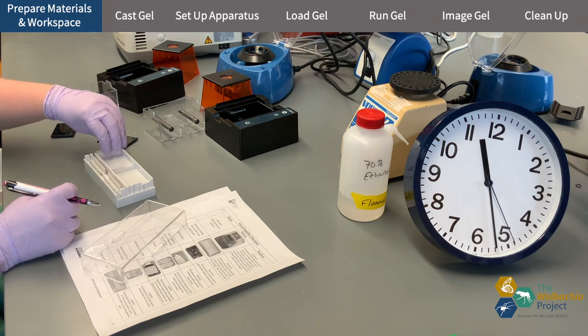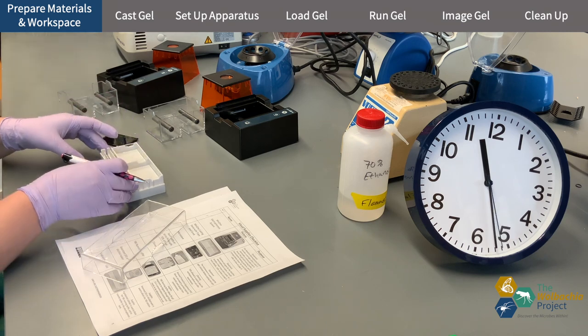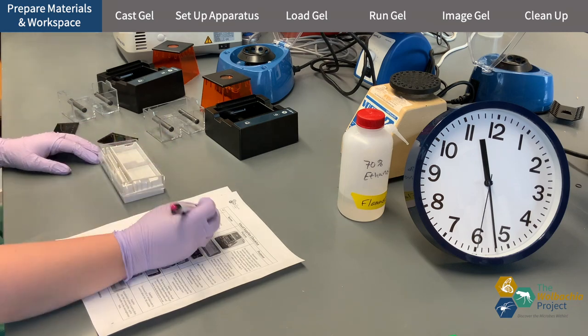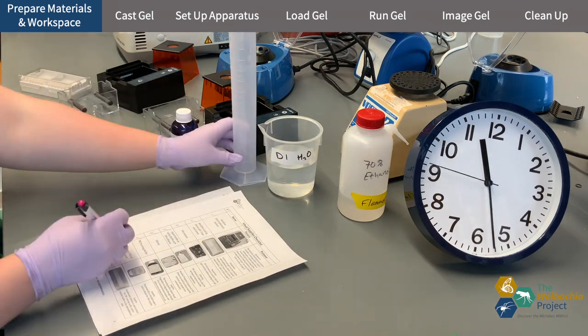If you're using Mini One we recommend using the 9-well comb which you can see in the casting setup. This comb will create the wells once the gel is set.